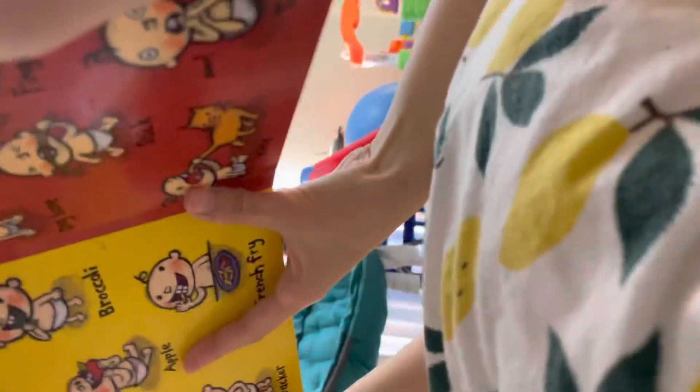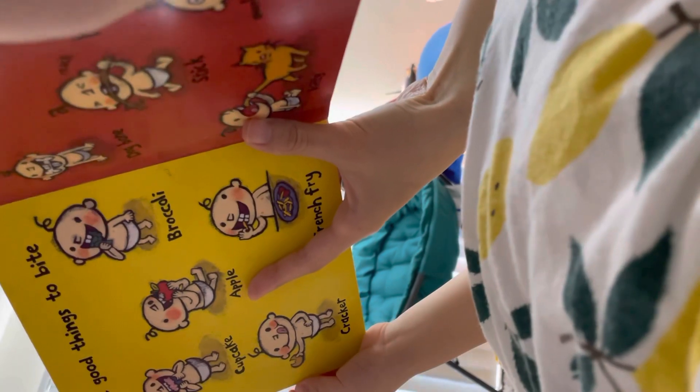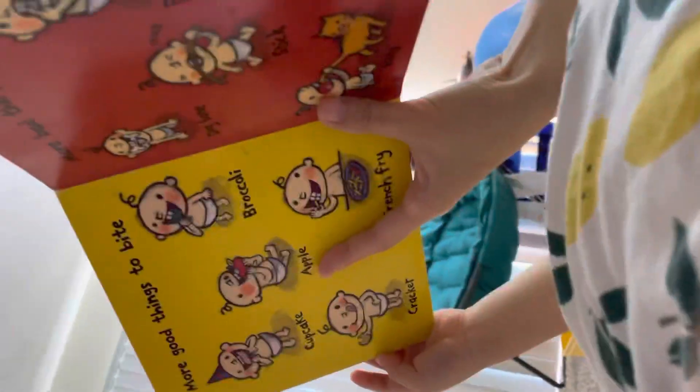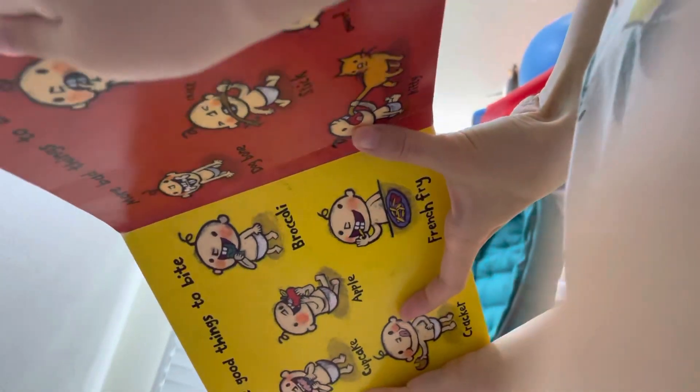More good things to bite. Cupcake. Apple. Broccoli. Cracker. French fry. More bad things to bite.